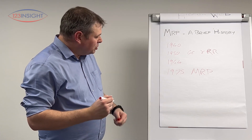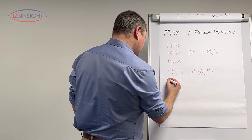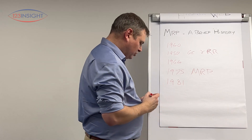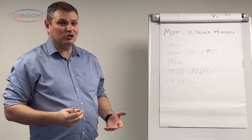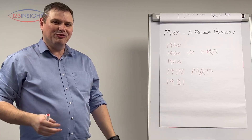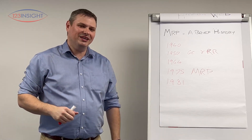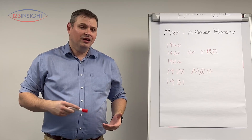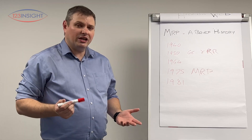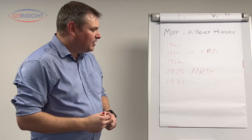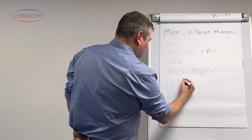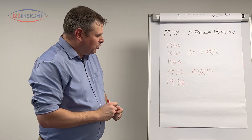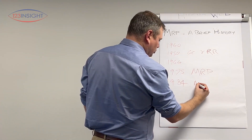That takes us pretty much up to 1981. Oliver White, someone well-known in MRP circles, and his company produced their book on manufacturing resource planning. That was given its second edition in 1984, which is what most people know it from, and that really laid the framework for what we call MRP2.